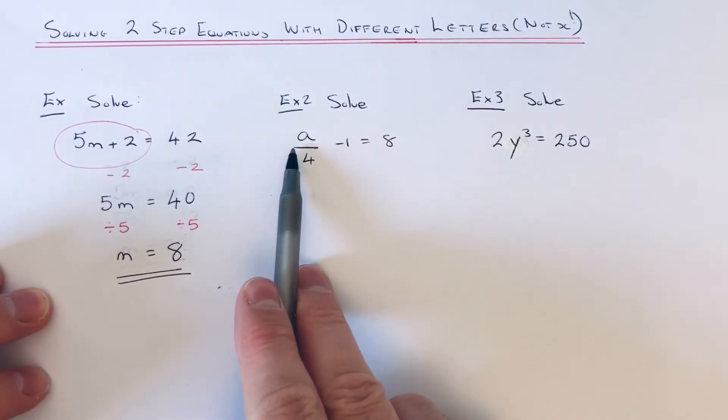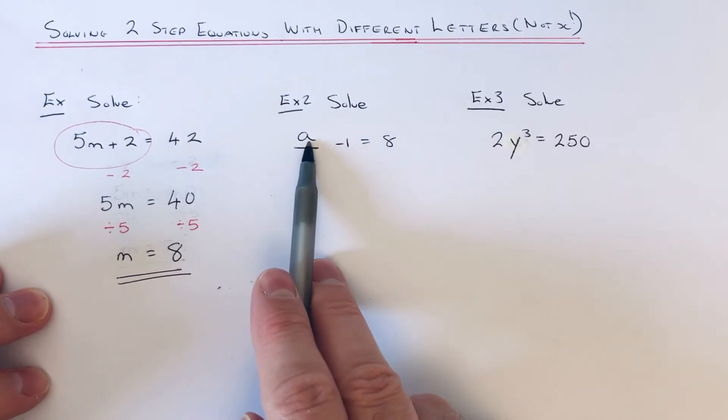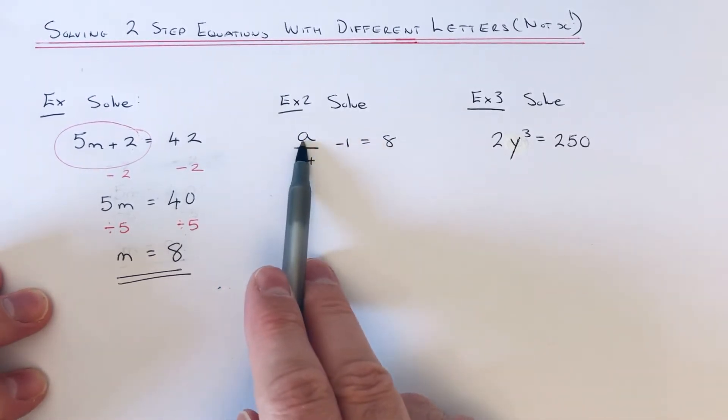So this time we've got to solve a over 4 take away 1 equals 8. So this time we need to work out the value of a. So again, if we look on the left hand side of the equation, what is happening to a?